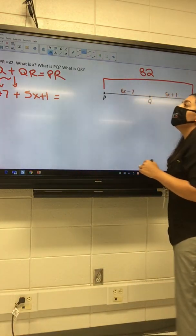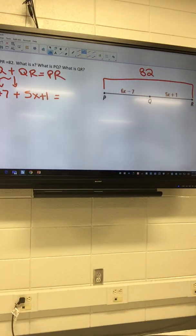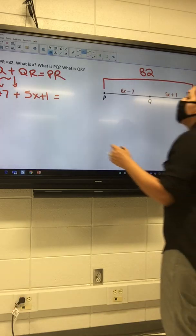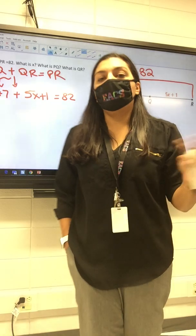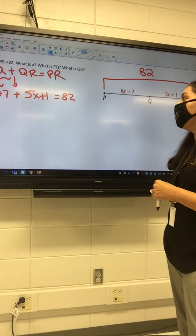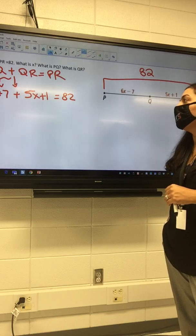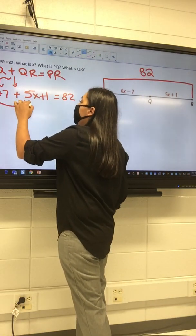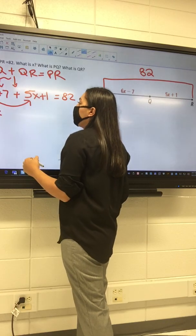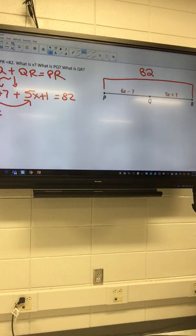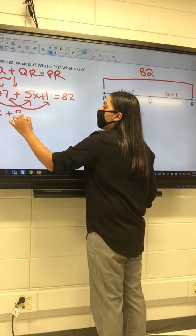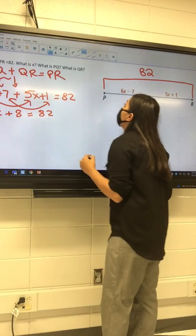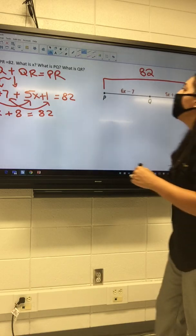And PR is what? 82. Perfect. Okay, so now we got our stuff together, we can combine our like terms. What can we combine? We can combine the x values. So I got a 6x and a 5x to give me an 11x. What else could I combine? The 1 and the 7 we can combine. But it's a negative 7 this time. You're right, it sure is.